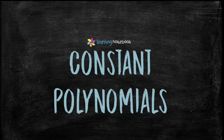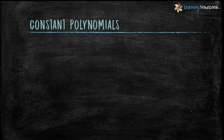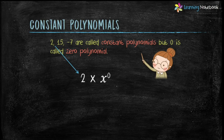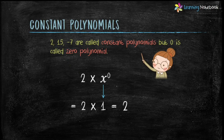The next topic is constant polynomials. Numbers like 2, 15, and minus 7 are called constant polynomials, but 0 is called the zero polynomial. Let's see why 2 is called a constant polynomial. Because 2 can be written as 2 into x raised to the power 0. Since x raised to the power 0 equals 1, we can write 2 into 1 equals 2. Therefore, 2 is a constant polynomial.